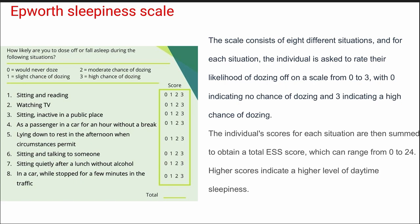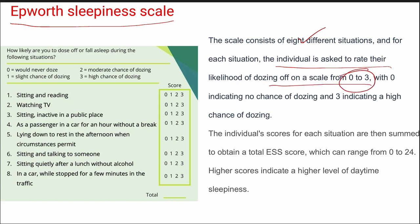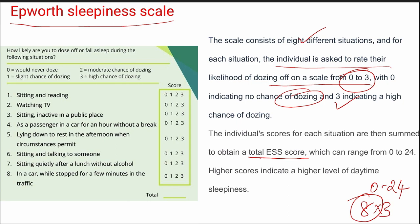Next is the Epworth Sleepiness Scale. This scale consists of eight different situations, for each of which the individual is asked to rate their likelihood of dozing off on a scale of 0 to 3, with 0 indicating no chance of dozing and 3 indicating high chance. The individual scores of each situation are summed to obtain a total Epworth Sleepiness Score ranging 0 to 24, where 24 means a higher level of daytime sleepiness.